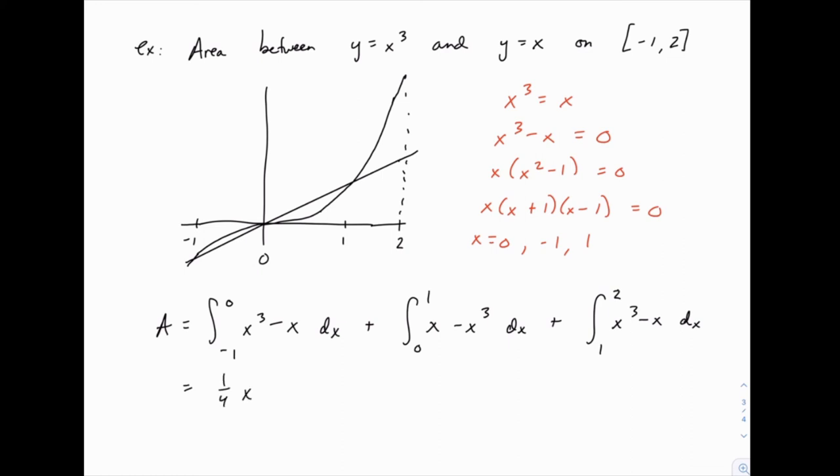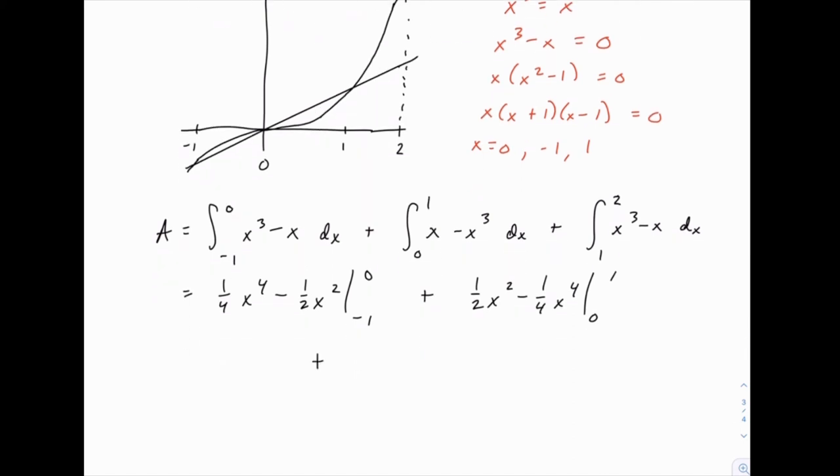For instance, we have 1 4th x to the 4th minus 1 half x squared from negative 1 to 0. Then we're going to have the same except in reverse: 1 half x squared minus 1 4th x to the 4th from 0 to 1. And then the last one will be back to the first order from 1 to 2.